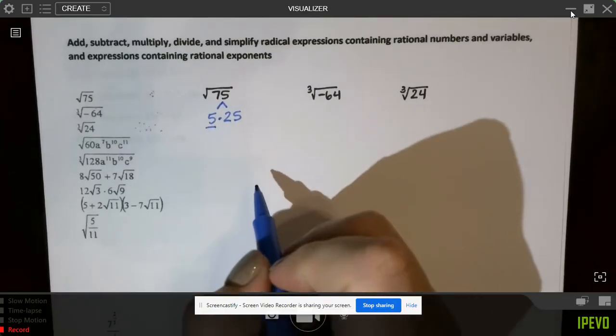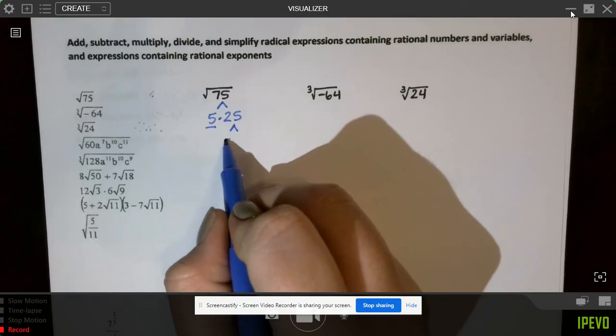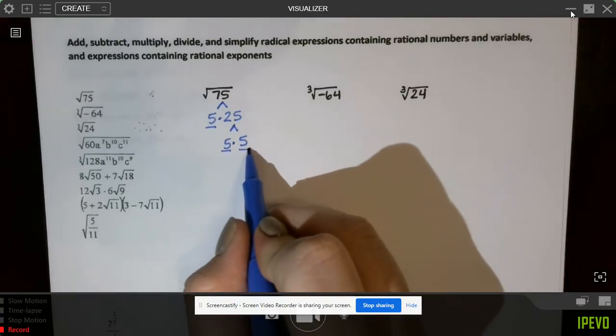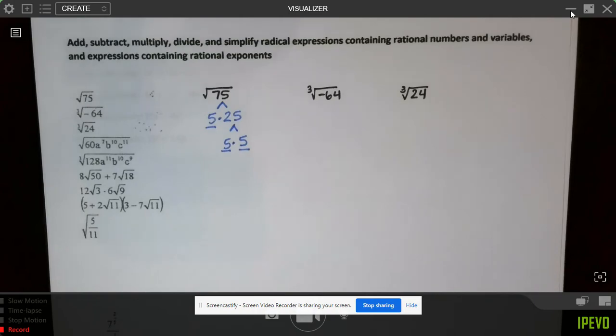I can't simplify 5 anymore, but I could break down 25 into 5 and 5, and that's where I have to stop for those as well, because I can't factor that anymore.